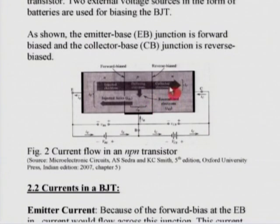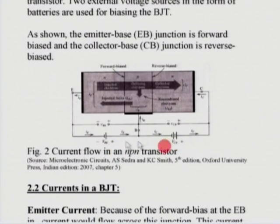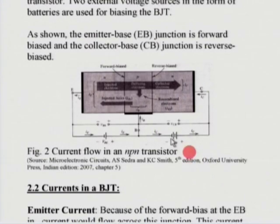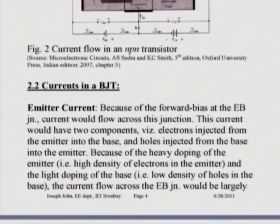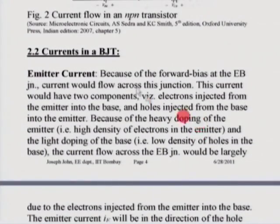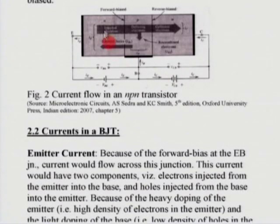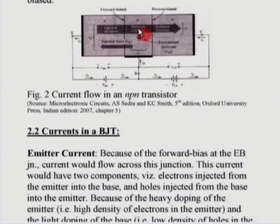As you would see from the biasing shown here in terms of two batteries, the voltage applied to the base-emitter junction is much smaller compared to the reverse bias applied to the collector-base junction. Coming to the currents in a BJT — the emitter is heavily doped and is an N-type region. When you forward bias the emitter-base junction, carriers — electrons — are injected from the emitter into the base. Simultaneously, holes are also injected from the base into the emitter, and both of these constitute the emitter current.